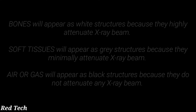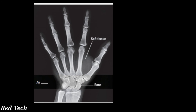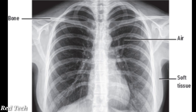Now look at this radiographic image — this is a hand AP x-ray showing soft tissue, air, and bone. You can see that soft tissue appears gray, air appears black, and bone appears white in the radiographic image.